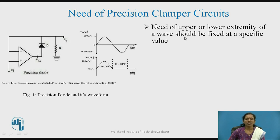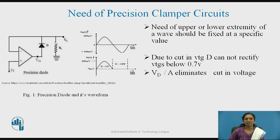However, diodes are practical diodes whose cut-in voltage is 0.7 volts. We cannot rectify signals below that cut-in voltage value. Therefore, we can use an operational amplifier with a diode, where the diode acts as an ideal diode. When we connect the diode in the feedback path of the op-amp circuit, the diode will act as an ideal diode. This combination can be utilized to obtain a precision clamper circuit, which precisely gives the shifting in DC level.